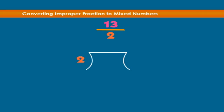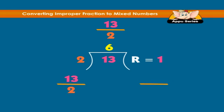13 divided by 2 equals 6 and the remainder is 1. Therefore, the mixed number becomes 6 1/2, where 1 is the remainder and 2 remains the denominator of the fraction part.